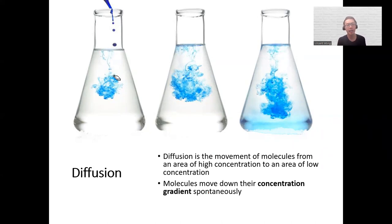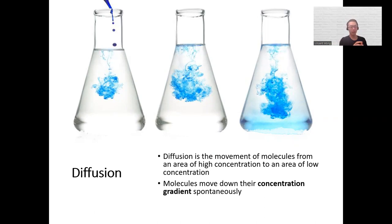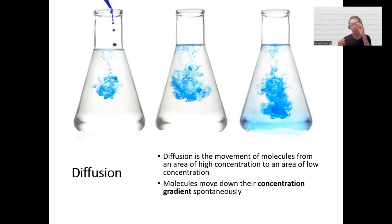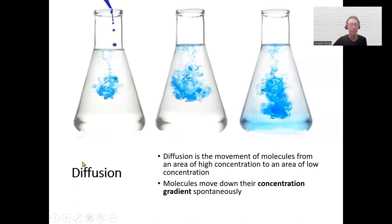When you add the dye, it's very concentrated in one spot, and there's no dye in the other area — so that is low concentration. The dye will naturally spread from area of high concentration to area of low concentration. That process is what we call diffusion. It's the most common type of transport that happens in any system.